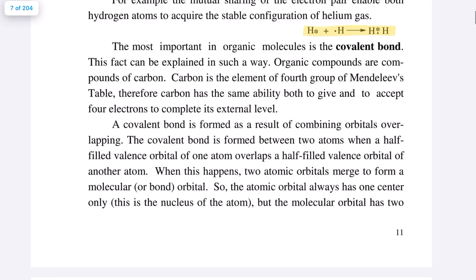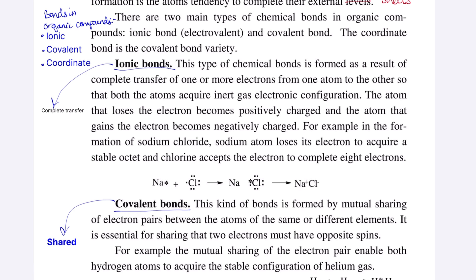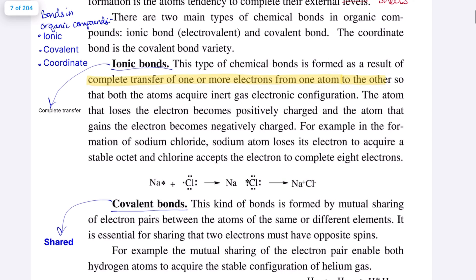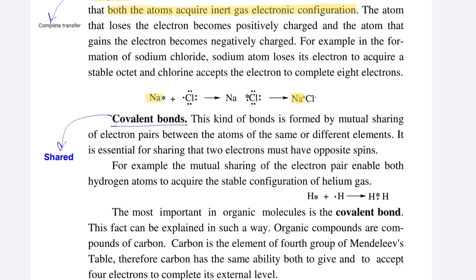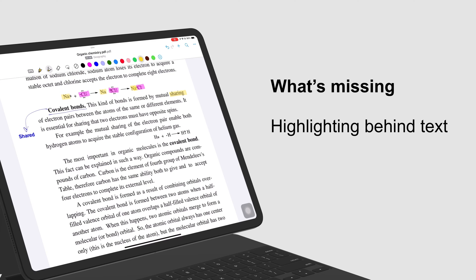Our highlighter still goes in front of our text, or whatever you annotate in the app. Sadly, even with a single layer, you can still see the dimming effect of the highlighter, which is a bit unpleasant to use. So we still hope the developers can move it to the back of our text, just to improve our highlighting experience in the app.